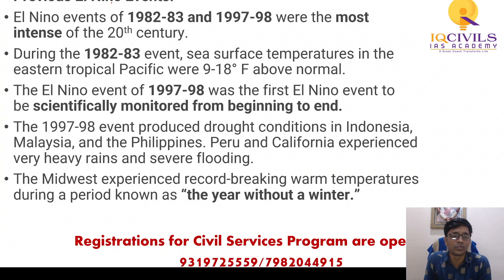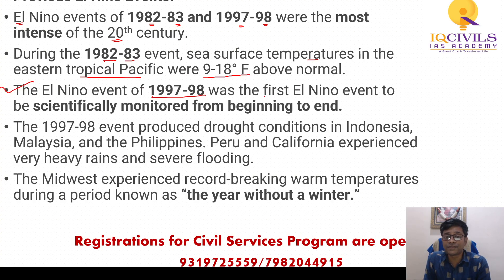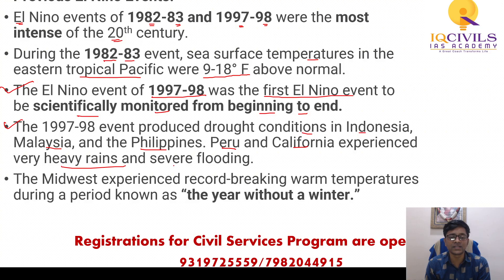There have been many El Niño events, but the most important of the 20th century were those of 1982–83 and 1997–98. During the 1982–83 event, sea surface temperatures in the eastern tropical Pacific off the coast of Ecuador and Peru were 9 to 18 degrees Fahrenheit above normal. The 1997–98 El Niño was the first event to be scientifically monitored from beginning to end, giving us the complete history of the phenomenon. The 1997–98 event produced drought conditions in Indonesia, Malaysia, and Philippines, while Peru and California experienced heavy rains and severe flooding.